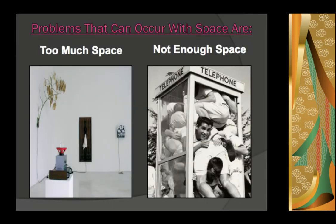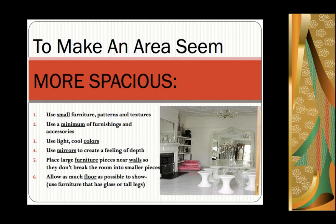Problems often occur with space — you either have too much space and don't know how to make it feel lived in, or there's not enough space. Some tricks to make a room seem more spacious: use small furniture, small patterns, small textures, and a minimum of furnishings and accessories. Use light and cool colors — they don't jump out as much. You can use mirrors, place furniture near the walls so they don't break the room into smaller pieces, and allow as much floor as possible to show. Use furniture with glass or tall legs so you can see more floor underneath.